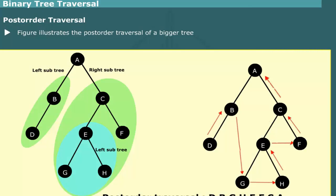The figure illustrates the post-order traversal of a bigger tree consisting of eight nodes. First, the left subtree T1 is traversed post-order, and nodes D and B are visited. Next, right subtree T2 is traversed. It includes a subtree T3 consisting of nodes G, E, and H. These nodes are visited in post-order: G, E, and H. Next, the remaining nodes of the right subtree are visited, which include F and C. Last of all, root node A is visited.